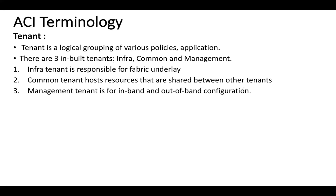Now let's start with ACI terminologies. First, the tenant. A tenant is a logical grouping for various policies that define a separate unit like a business unit, customer, or group. A tenant can mean different things to different organizations — for a service provider, a tenant means different customers; for a company, a tenant means different departments like IT or HR. There are three built-in tenants in ACI fabric: infra tenant, common tenant, and management tenant. The infra tenant is used for fabric underlay — internal fabric communication happens using the infra tenant.